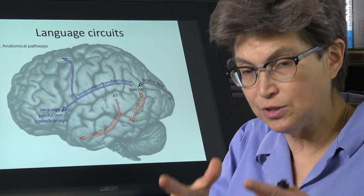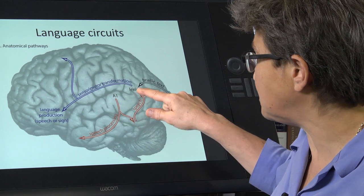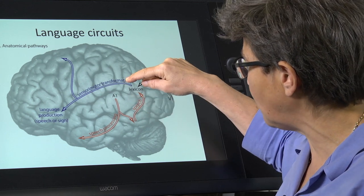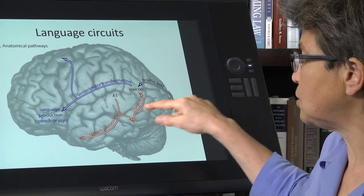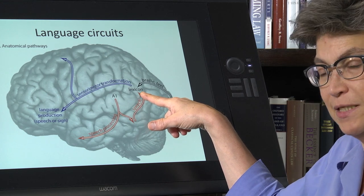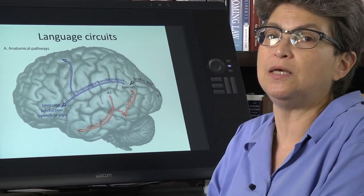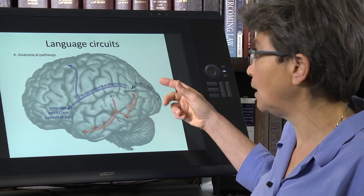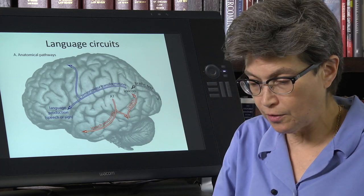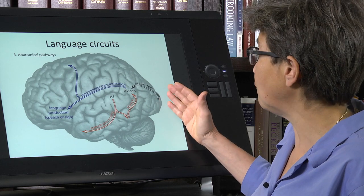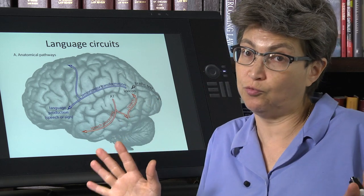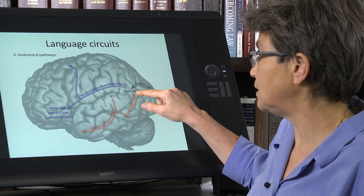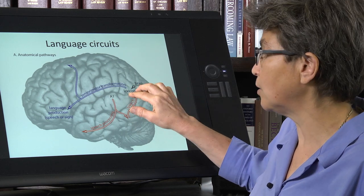And then the sounds that are processed get sent to this area here, which is the temporoparietal junction, this area where the temporal lobe meets the parietal lobe and very close to the occipital lobe. So this area right here is where we think there's basically a lookup table. You get this auditory sound, it means this. It's the dictionary for speech. So this is the lexicon of the brain. And it's not just the lexicon for spoken language. It's also the lexicon for reading. So information from however an individual reads, whether it's by sight or by feel, that information comes from the primary visual cortex and it is sent to this temporoparietal junction where the information is read in.